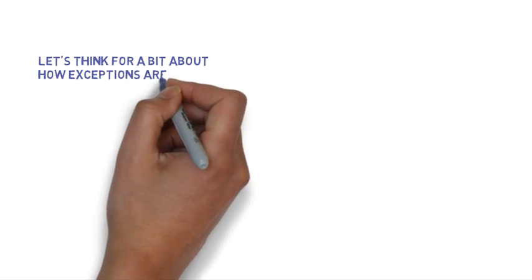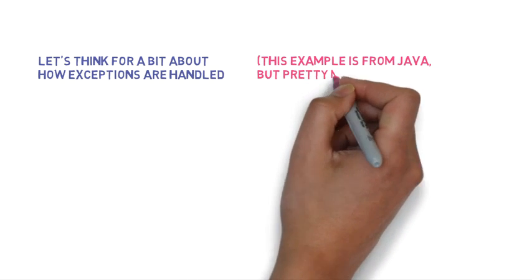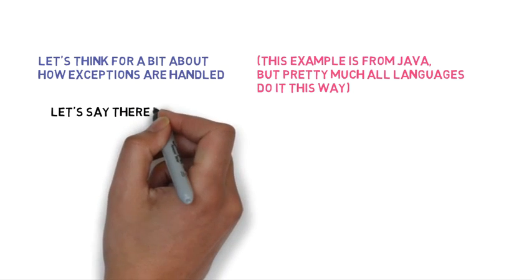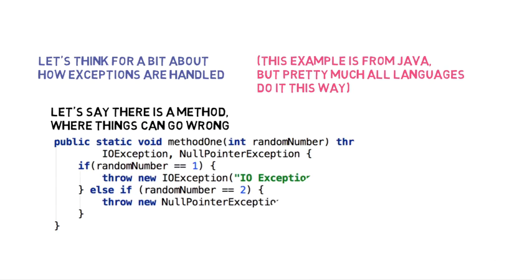Let's think about how exceptions are handled in code. We'll look at an example from Java, but pretty much all languages that support exceptions handle them in exactly this manner. Say we have a method where things can go wrong, and when things go wrong this method throws an exception. In this Java example, there is a method one which takes in a random number and throws two kinds of exceptions: IOException and NullPointerException. If the random number equals one, we throw an IOException, and if it's two, we throw a NullPointerException.